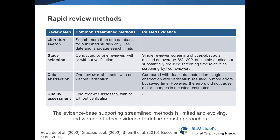When it comes to study selection — whether we should have one reviewer with or without verification — we see that if one person screens titles and abstracts, we miss an average of about 8 to 20 percent of eligible studies. However, it does reduce the time quite a bit versus having two people screening. For data abstraction with one person abstracting with or without verification, we do see more errors, but time is saved.